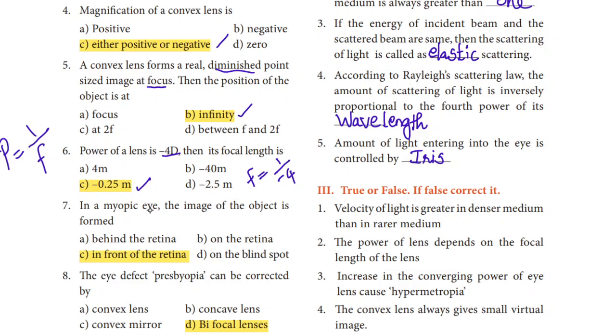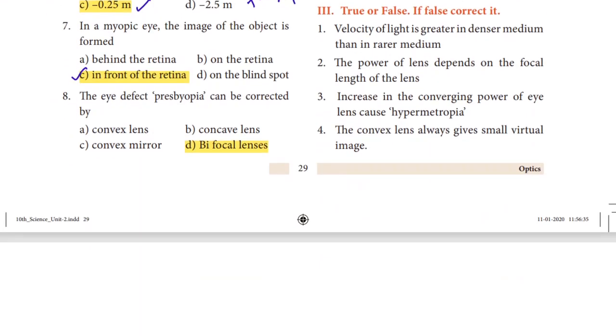In a myopic eye, the image of the object is formed before the retina, in front of the retina. So option C, in front of the retina, is the right answer.